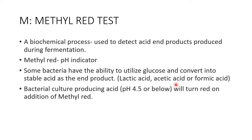Not all three acids are produced — any one of these can be present depending on the species. The bacterial culture producing acid can be at pH 4.5 or below. If the bacteria has the ability to produce acid, the methyl red indicator will turn red. If not, it will remain yellow. Methyl red is the pH indicator used here, and it changes color depending on the pH.